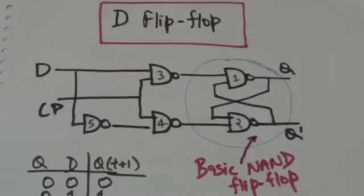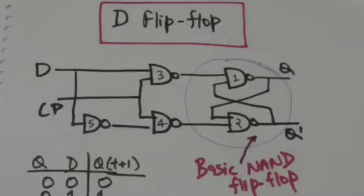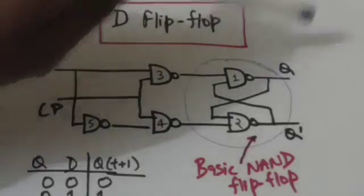Q and Q-naught are complements of each other. Output Q gives the value of the bit stored in the flip-flop. Q-naught gives the complement value of the bit stored in the flip-flop. The present state of the D flip-flop is determined from the value of Q.